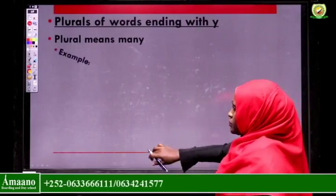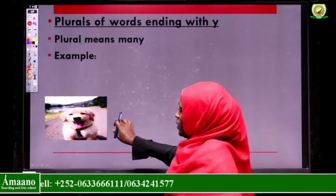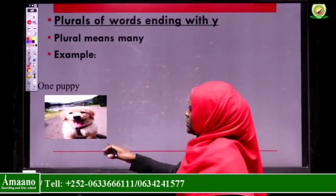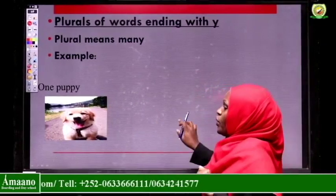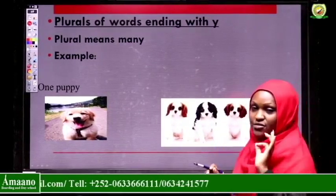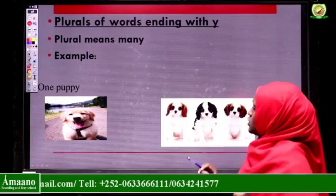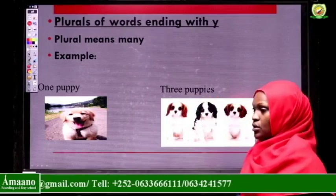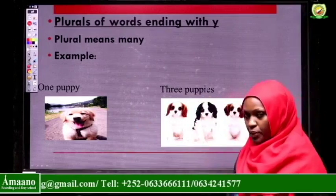For example, I have the puppy. We say one puppy. When there are many, how many do we have here? We have three puppies — one, two, three. So when there are many we say three puppies. One puppy, three puppies.